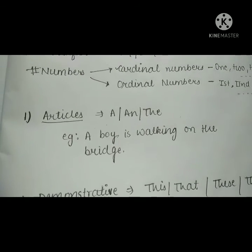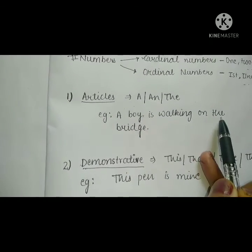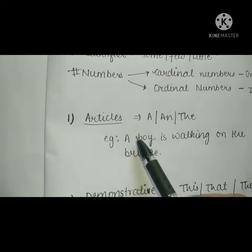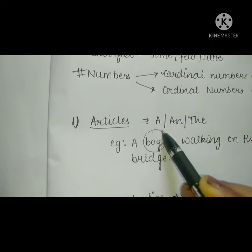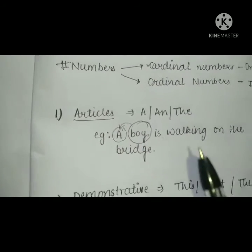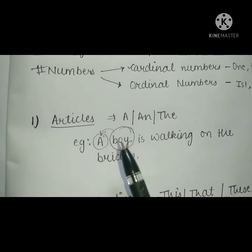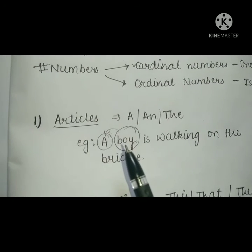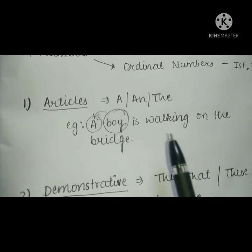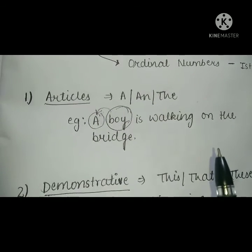Now, briefly, I will explain with examples. For articles: 'A boy is walking on the bridge.' What was used before the noun 'boy'? The article 'A' was used before the noun. So our article was used as a determiner before the noun.